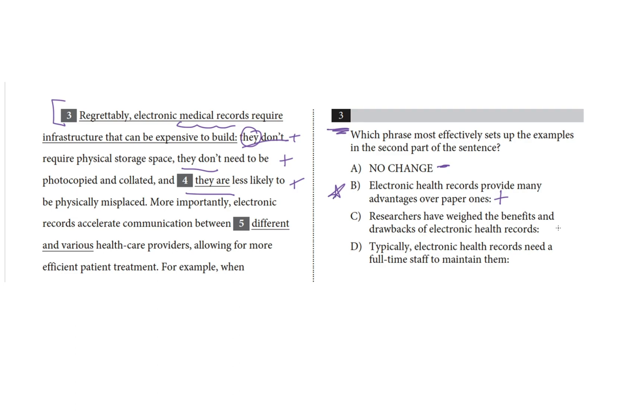Choice C, researchers have weighed the benefits and drawbacks of electronic health records. Well, that's both negative and positive at the same time. So, that doesn't set up our list of positive examples. And finally, choice D. Typically, electronic health records need a full-time staff to maintain them. This doesn't seem to introduce a list, and the existence of a full-time staff is kind of neutral. Maybe a question mark or an equal sign. That's not a plus or a negative, it just is. I feel confident that B is my answer. The examples are all positive, and choice B sets up a list of advantages.